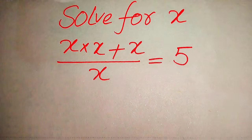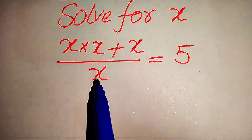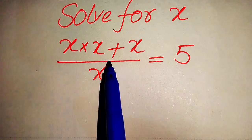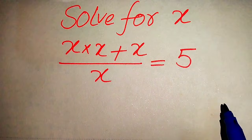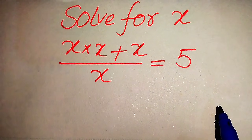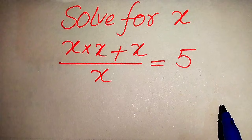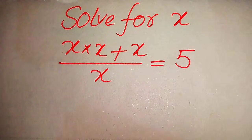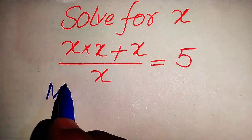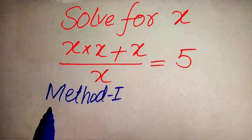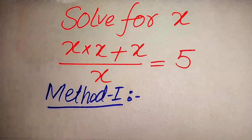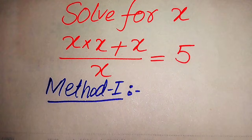Hello everyone. We solve this problem for the values of x, where x multiplied by x plus x divided by x equals 5. First we find all the roots of this equation, and at the end we verify which roots are solutions and which are extraneous roots. We solve this problem using two methods — now we move toward the solution from the first method.